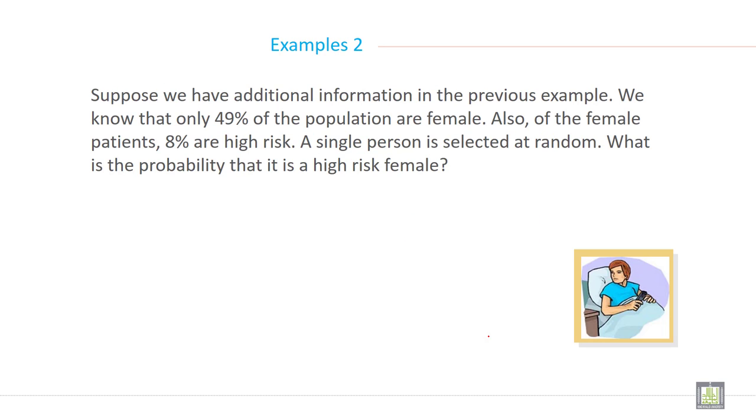Example two. Suppose we have additional information in the previous example. We know that only 49% of the population are female. Also, of the female patients, 8% are high risk. A single person is selected at random. What is the probability that it is a high risk female?